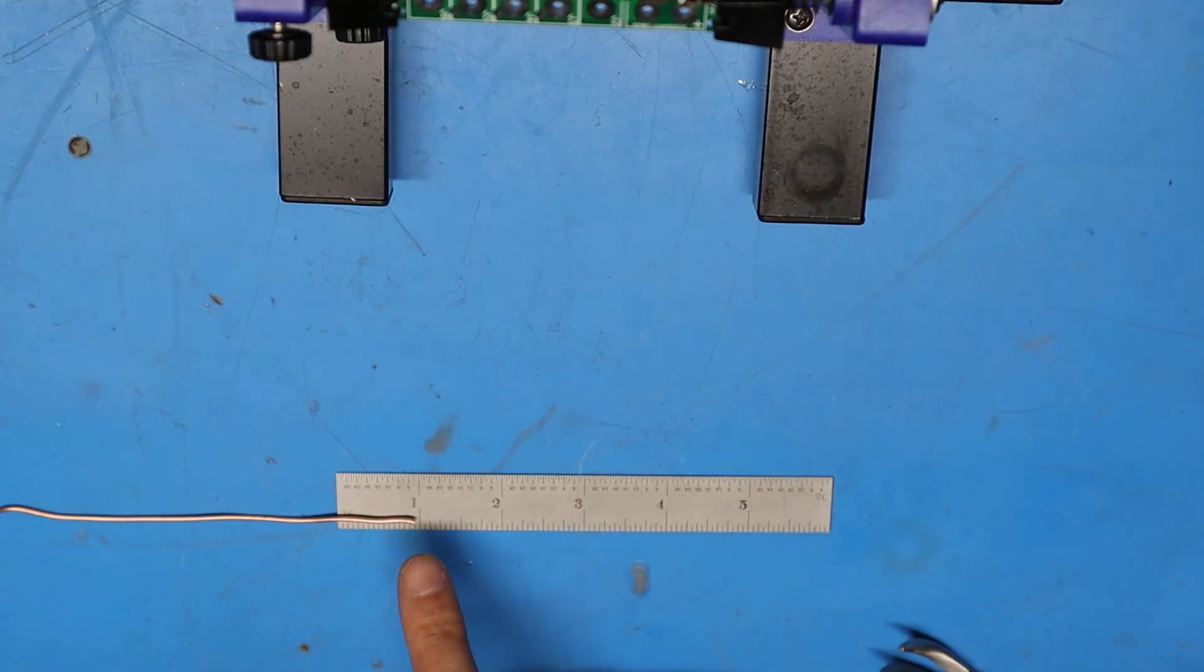The next step calls for cutting 12 pieces of this copper wire somewhere between five-eighths and three-quarters of an inch long.